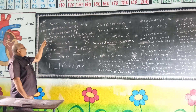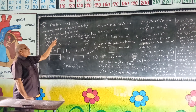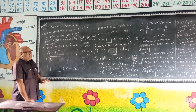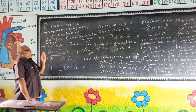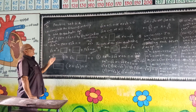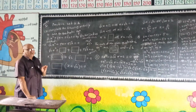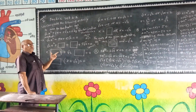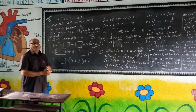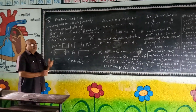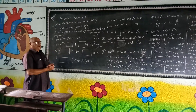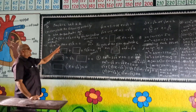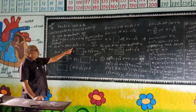The equation is: root 2 x squared plus 7x plus 5 root 2 is equal to 0, to be solved by factorization. The equation can also be written as root 2 x squared plus 6x, which is equal to 0.